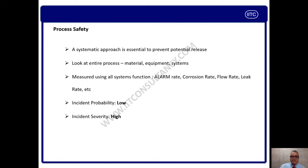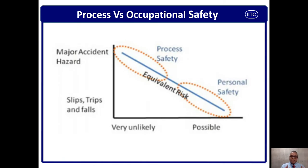When I say severity is very high, that means it can kill many people at one point of time, because this is a process safety related event. Anybody and everybody who is in the contour of high fire, high radiation, high explosive zone will be affected and may be killed. That is why the severity is very high — severity in terms of fatality, production loss, reputation loss, and financial loss. I hope by now you understand the basic concept of occupational safety and process safety.